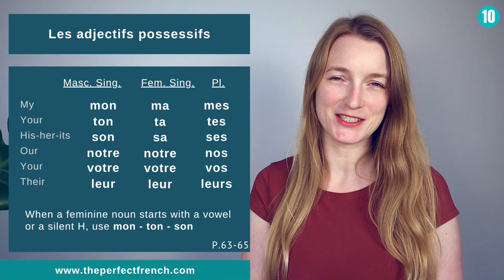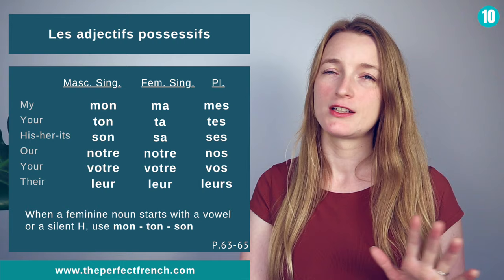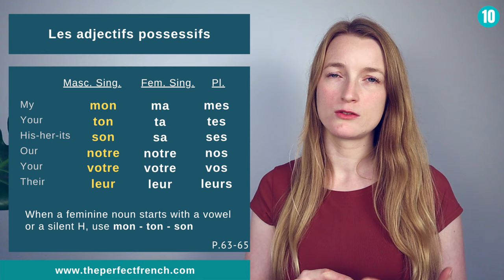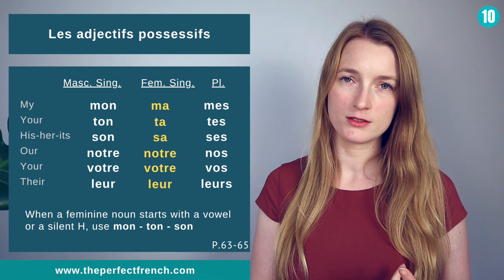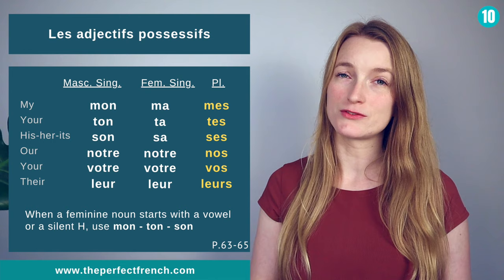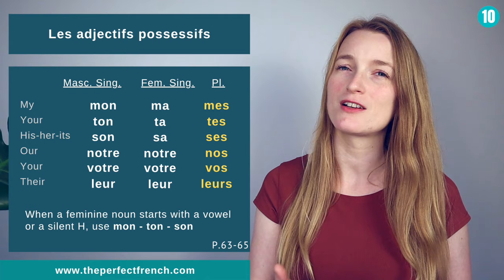Les adjectifs possessifs. We have three columns: masculine singular, feminine singular, and plural. Mon, ton, son / notre, votre, leur / ma, ta, sa / notre, votre, leur — and the plurals mes, tes, ses / nos, vos, leurs. Be careful that mon, ton, son can also be used with a feminine noun when it starts with a vowel or silent H.